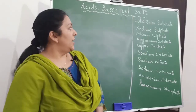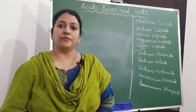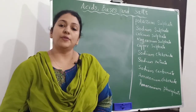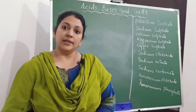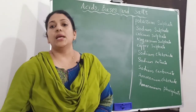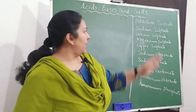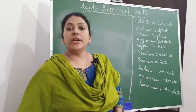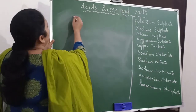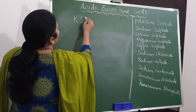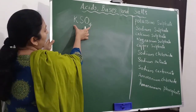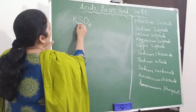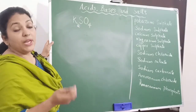Before going further, we will write the chemical formulas of some salts so you get familiar with them. You have already learned how to write chemical formulas using valencies in class 9. I have written several salts on the board. The first one is potassium sulfate. Potassium is K and sulfate is SO4. The valency of sulfate, the polyatomic ion, is 2. Therefore, we swap around the valencies.